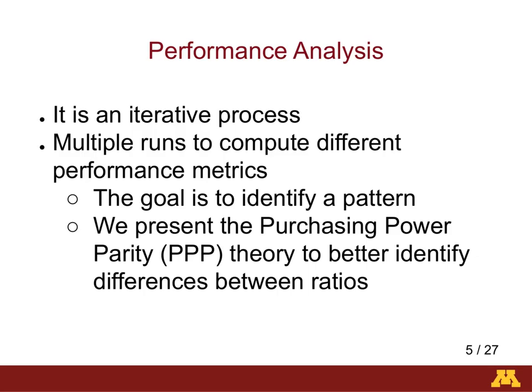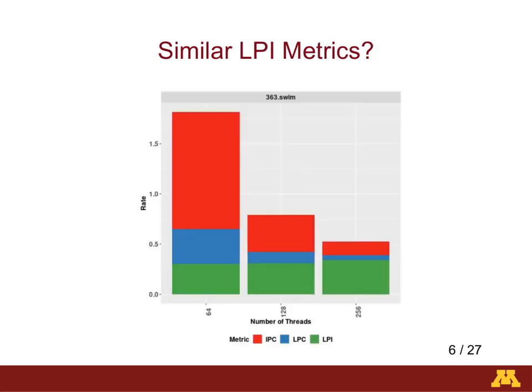Purchasing power parity has been used to compare currencies of countries by using different products as benchmarks. Here's an example of three different performance metrics of a benchmark. The 363.swim benchmark is a weather prediction benchmark that is part of the SPEC OpenMP 2012 suite and was written in Fortran. We ran the benchmark multiple times and increased the number of threads from 64 to 128 to 256. The IPC rates and LPC rates decreased as the number of threads was increased. The loads per instruction (LPI) rate remained relatively the same for all thread settings.